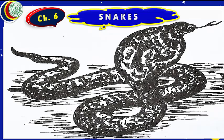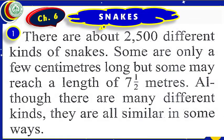After having some understanding of these words, let us move forward. This is the picture given at the first page of your lesson. As this lesson is about snakes, I have divided the passage into parts to make it more visible and easy to read from the computer screen. Let us start reading. There are about 2500 different kinds of snakes. Some are only a few centimeters long, but some may reach a length of seven and a half meters. Although there are many different kinds, they are all similar in some ways — they all eat and crawl.